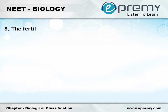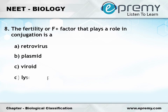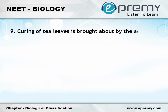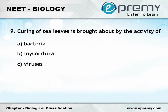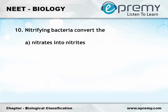Question number 8: The fertility or F plus factor that plays a role in conjugation is — Option A: Retrovirus; Option B: Plasmid; Option C: Viroid; Option D: Lysogenic phage. The answer is Option B, Plasmid. Question number 9: Curing of tea leaves is brought about by the activity of — Option A: Bacteria; Option B: Mycorrhiza; Option C: Viruses; Option D: Fungi. The answer is Option A, Bacteria.